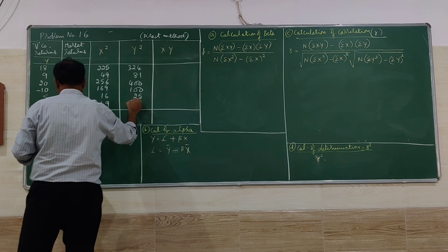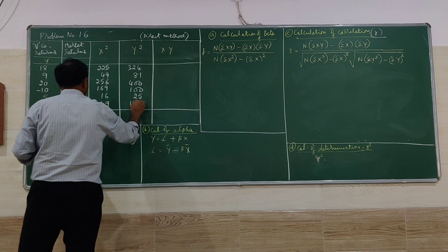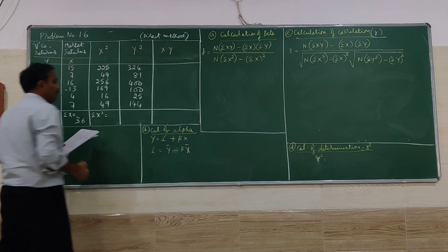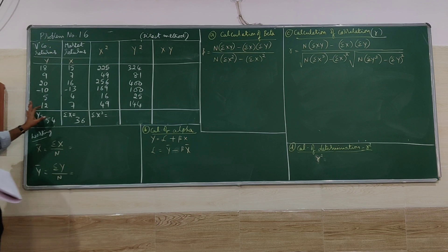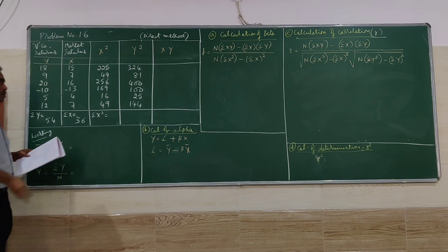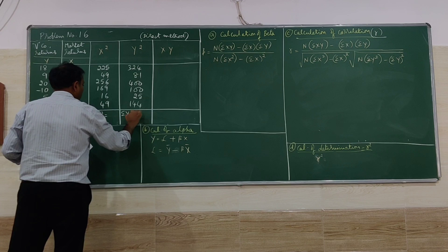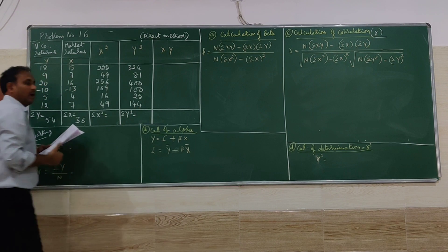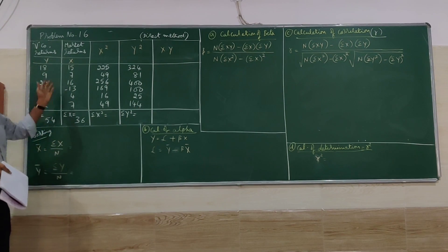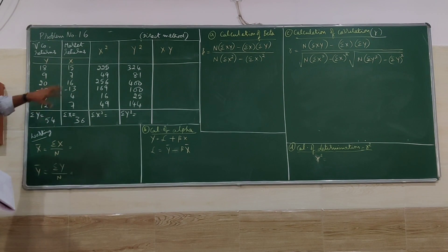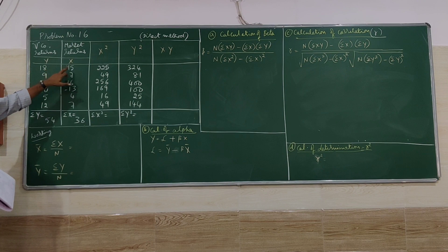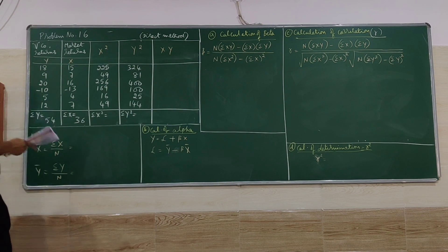Continuing y squared: 5×5 = 25, 12×12 = 144. We take the total of y squared as Σy². The last column is x times y: 18×15, then 9×7 = 63.